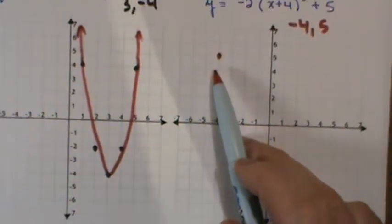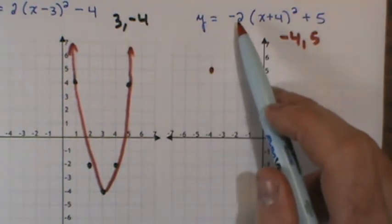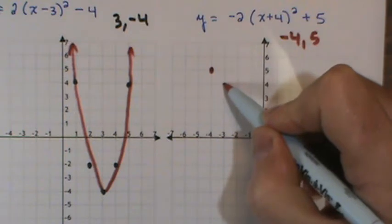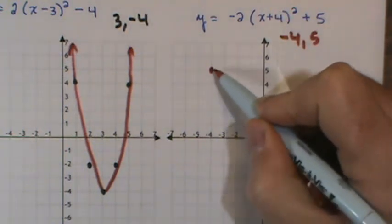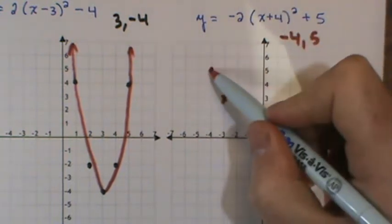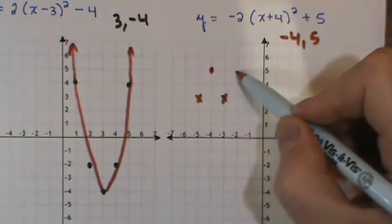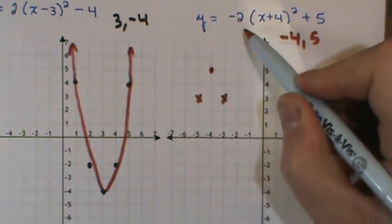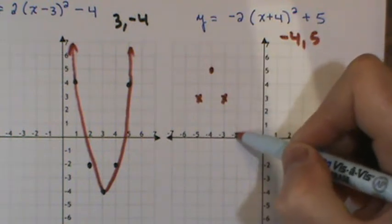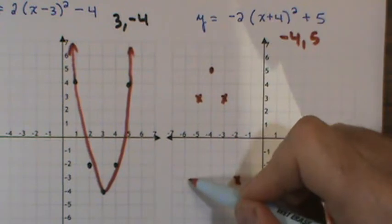I'm just going to be using the same concept I've been talking about. I've got an A value here that's negative 2. So it tells me I should go right 1. Down 1 is what I expect as a standard movement, but the negative 2 is saying go twice that. So I go down 2 units. Left 1, down 2 units. Right 2, I expect 4 but I need to double that. So I'm going to go down 8. 1, 2, 3, 4, 5, 6, 7, 8. And then I have a sister point.